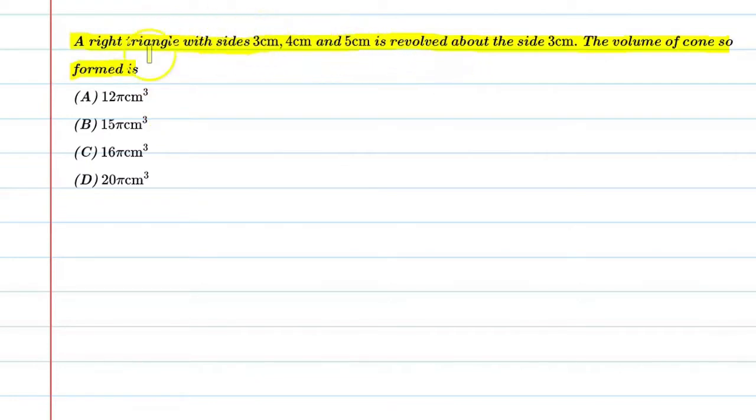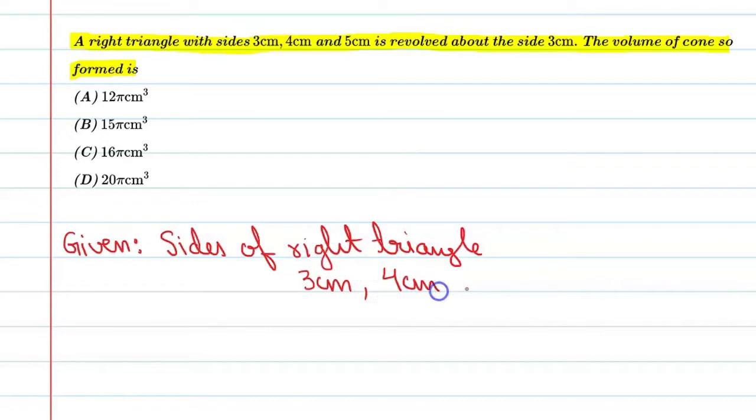The right angle triangle is revolved, so the shape of the cone is going to be asked. What is the volume of the cone? Let's start with this question. First let's write given - sides of a triangle, that is 3 cm, 4 cm and 5 cm. These are the sides.